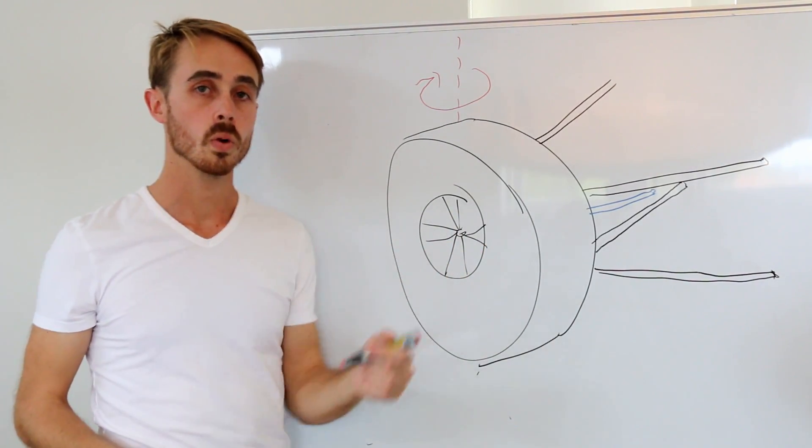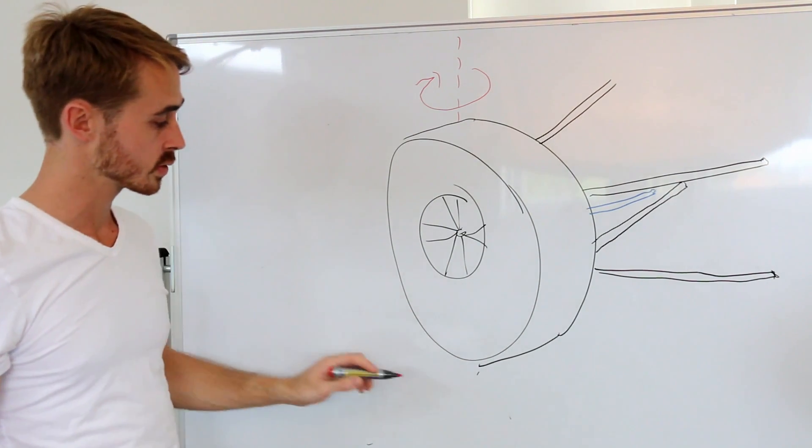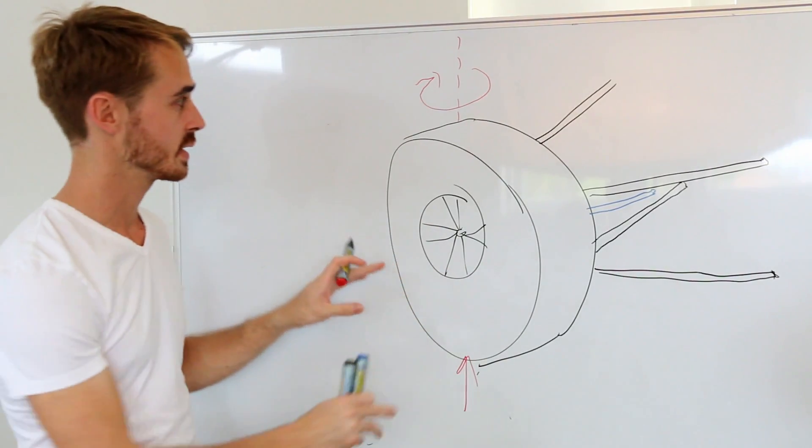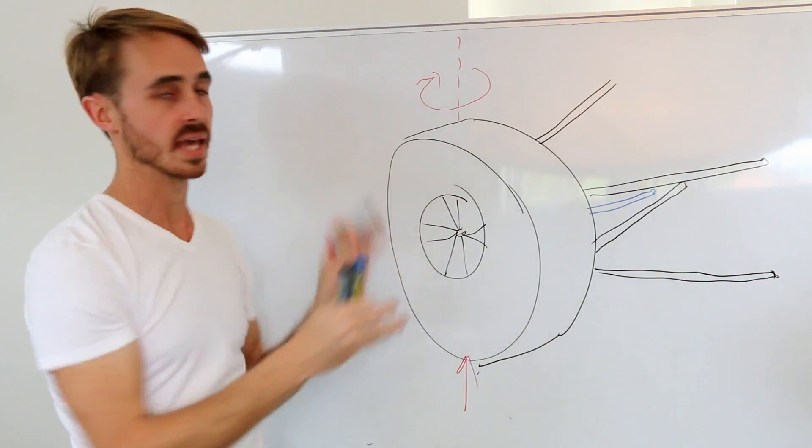So to start off with, what is bump steer? Well, bump steer is when you have a movement upwards of your tire caused by, say, a bump, and that causes the tire to rotate.